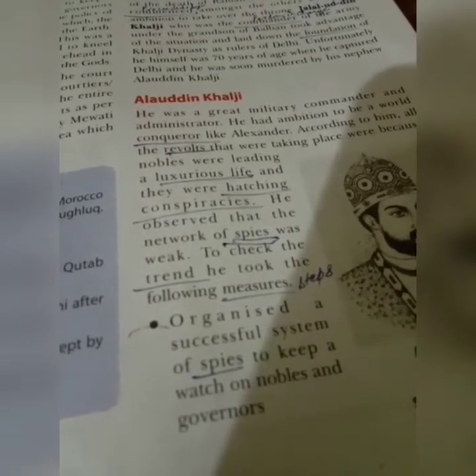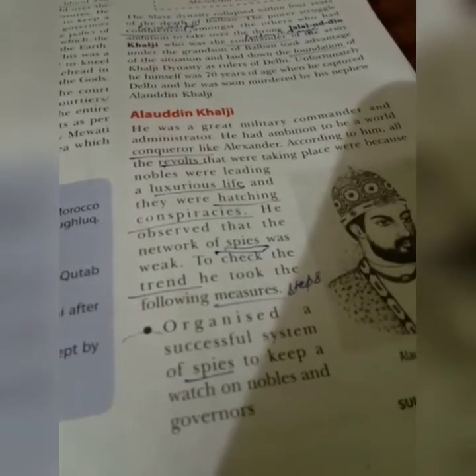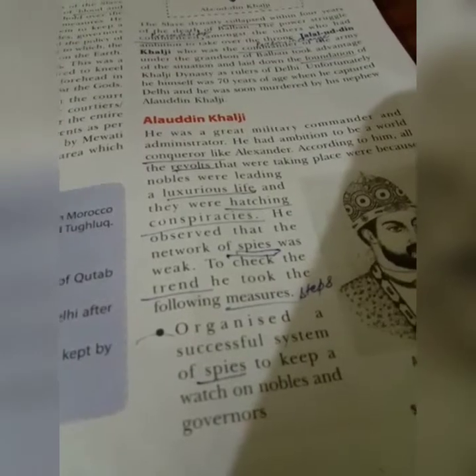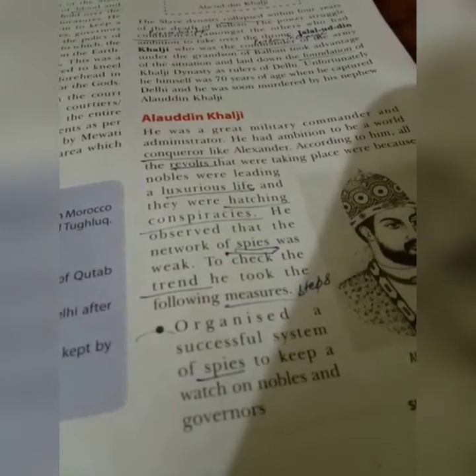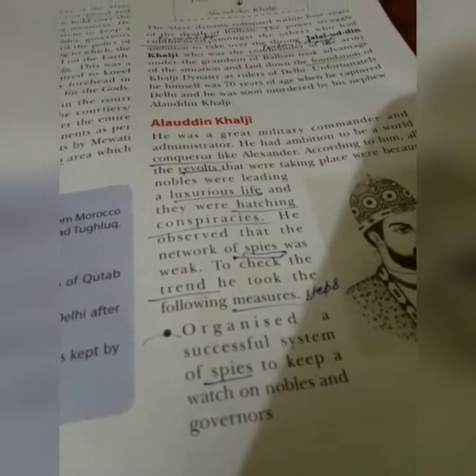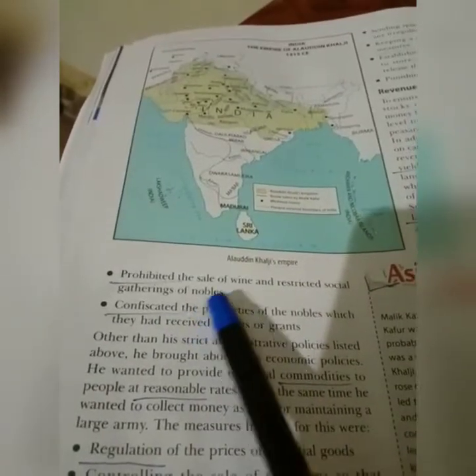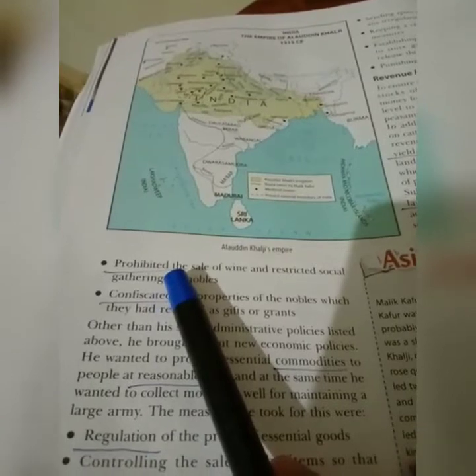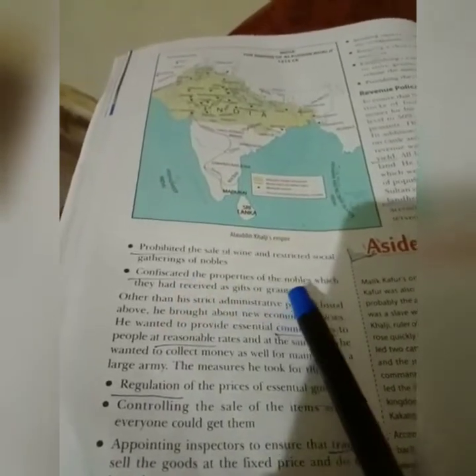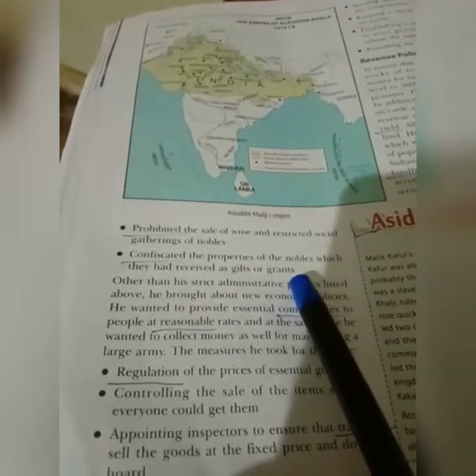To check these activities, Aladdin Khalji took several measures. He organized a successful system of spies to keep watch on nobles and governors. He restricted the sale of wine and prohibited social gatherings of nobles. He also confiscated — took away — all properties that the nobles had received as gifts or grants. These were all policies in the administrative field of Aladdin Khalji.